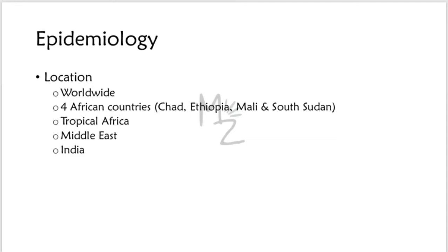Epidemiology: the global eradication campaign sponsored by the WHO to provide clean drinking water has greatly reduced the number of cases. During 2015, only 22 new cases were detected worldwide, occurring in four African countries: Chad, Ethiopia, Mali, and South Sudan. Prior to the campaign, the disease occurred over large areas of tropical Africa, the Middle East, and India, where tens of millions of people were affected.